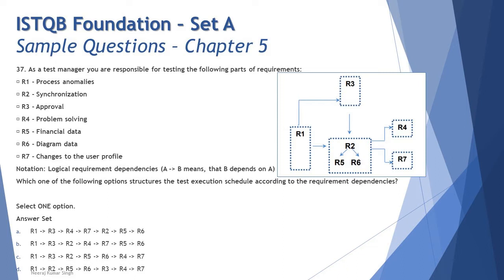Question number 37 is about test execution flow. As a test manager, you are responsible for testing the following requirements: R1 process anomalies, R2 synchronization, R3 approval, R4 problem solving, R5 financial data, R6 diagram data, and R7 changes to the user profile. The diagram shows logical requirement dependencies — if A goes to B, then B is dependent on A. So R3 is dependent on R1, R2 block, and R5 and R6 are dependent on R1; R4 and R7 are dependent on R2.